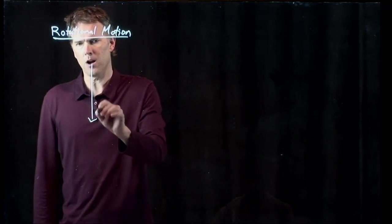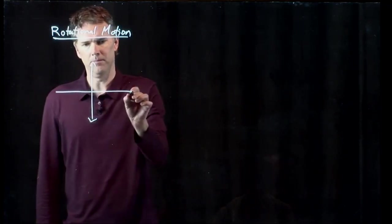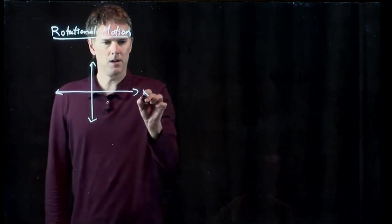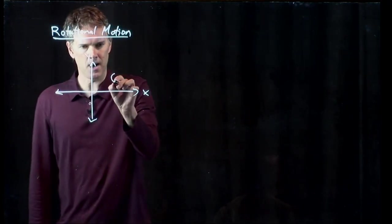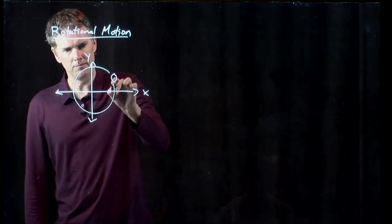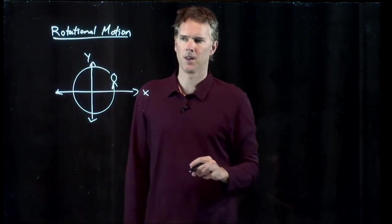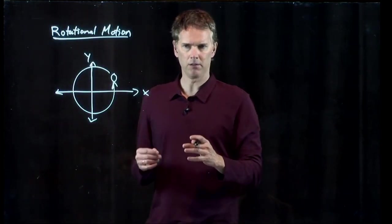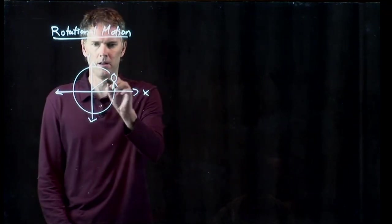Well, if we draw an xy coordinate system, then rotational motion is just an object moving around in a circle, like so. And we can define a few things to characterize that circle.